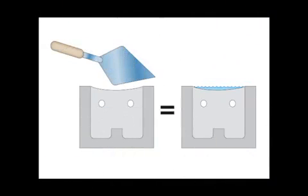Most masons screed off a bond beam or poured wall with the heel of their trowel. This can lead to a concave surface, which will lead to the ponding of water. The longer the water sits in the wall, the more damage it will cause.